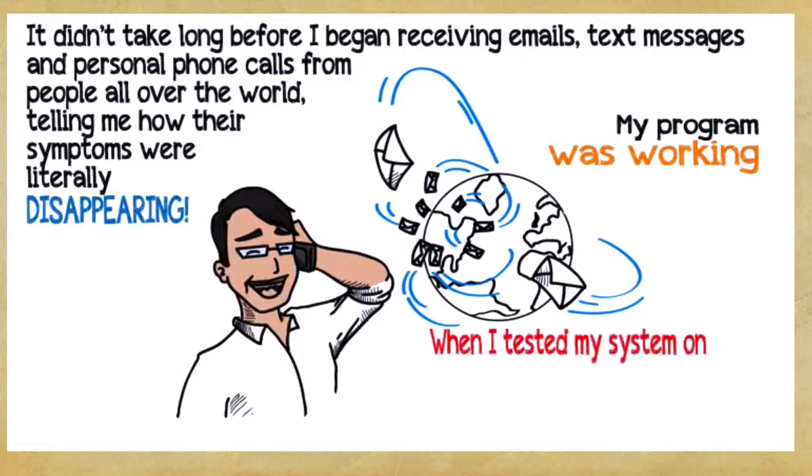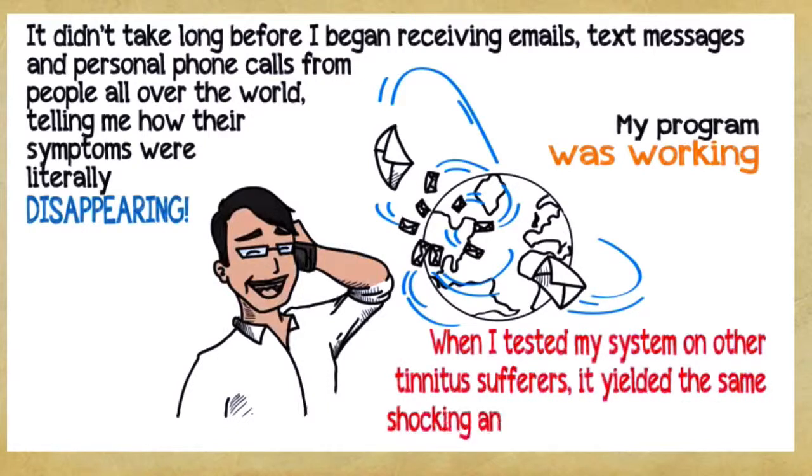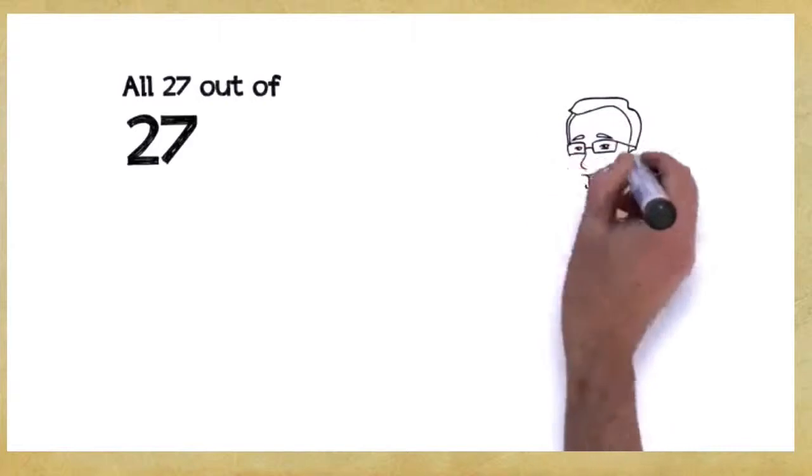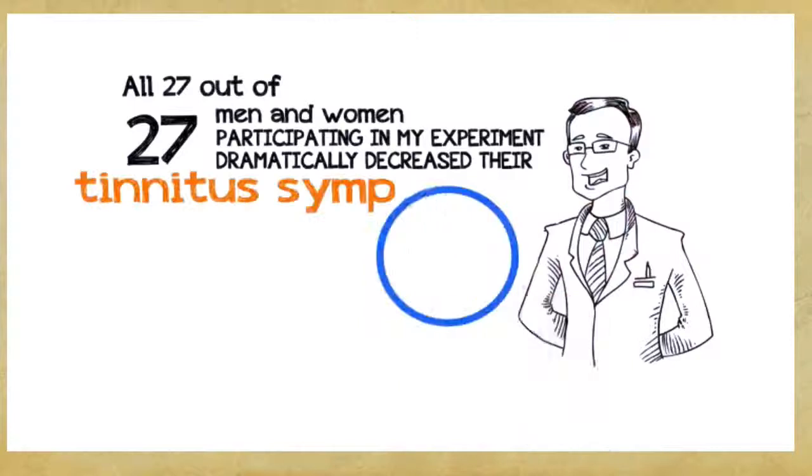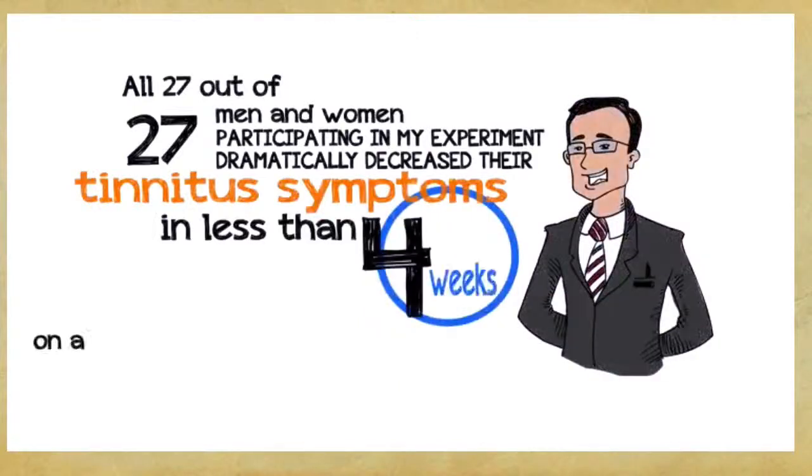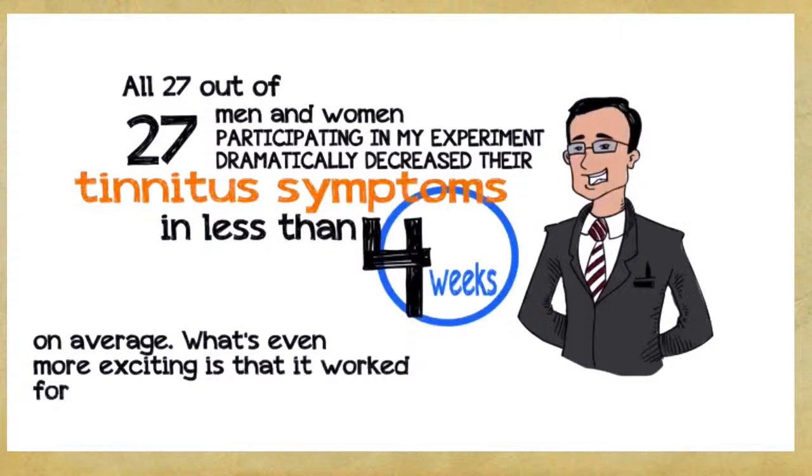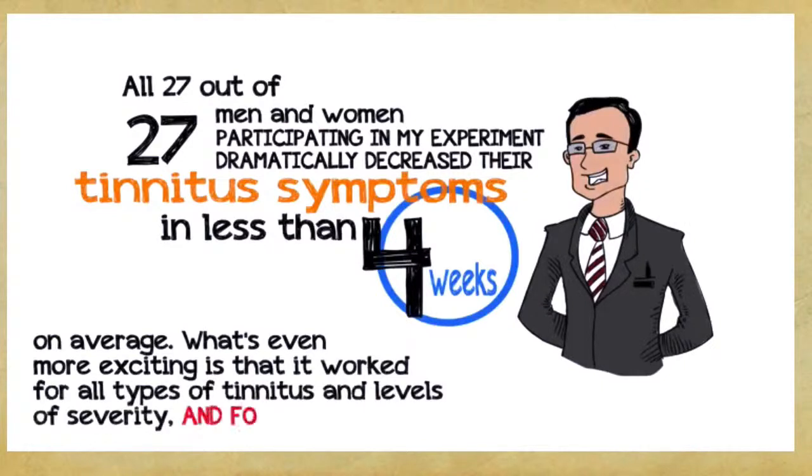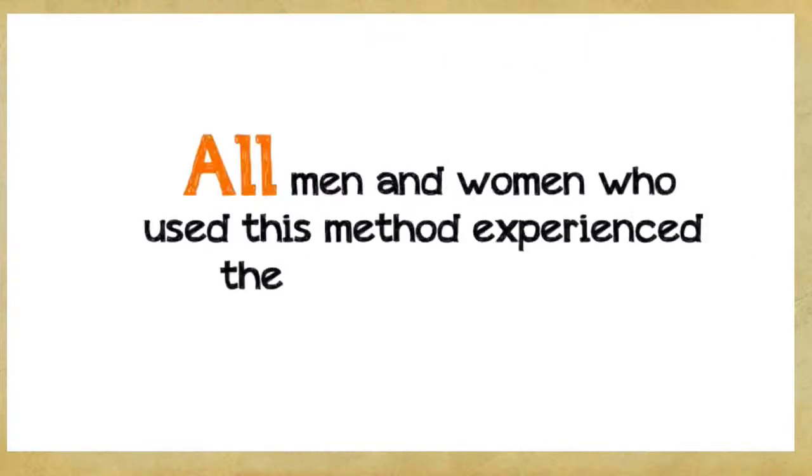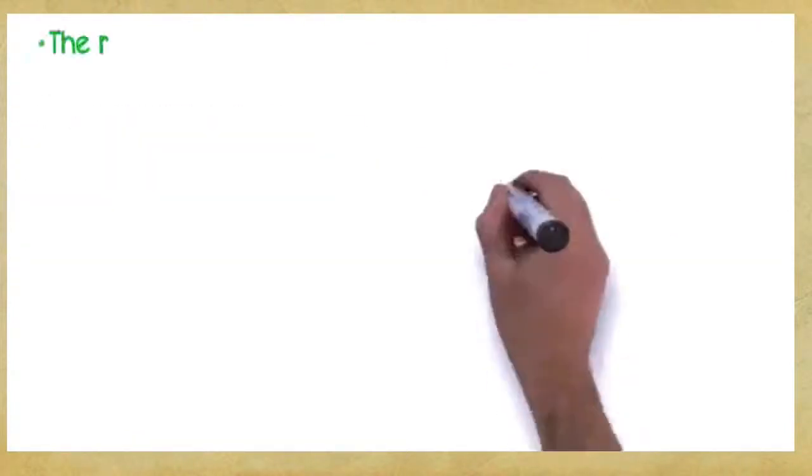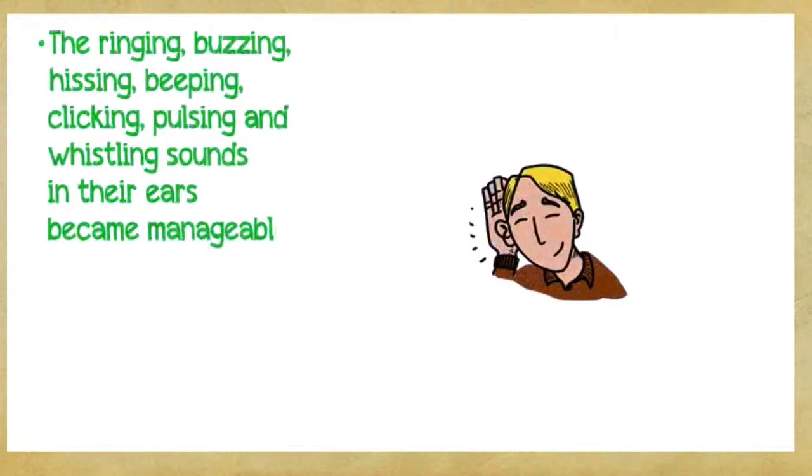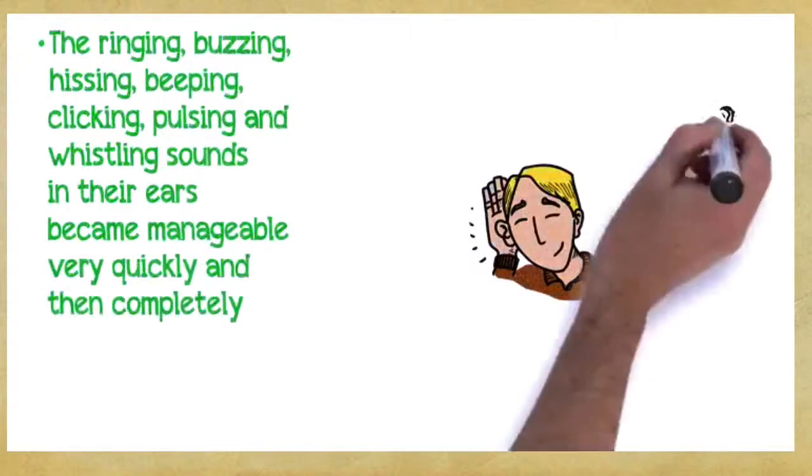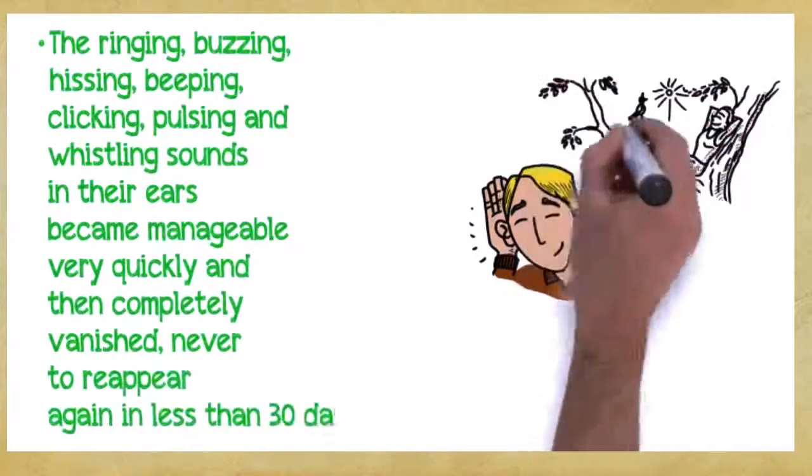I sent off my five-step protocol to several dozen tinnitus sufferers and waited for them to tell me how it worked. It didn't take long before I began receiving emails, text messages, and personal phone calls from people all over the world telling me how their symptoms were literally disappearing. My program was working and more and more people were asking me for help. When I tested my system on other tinnitus sufferers, it yielded the same shocking and groundbreaking results. All 27 out of 27 men and women participating in my experiment dramatically decreased their tinnitus symptoms in less than four weeks on average. What's even more exciting is that it worked for all types of tinnitus and levels of severity and for men and women of any age.